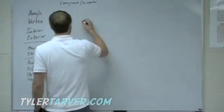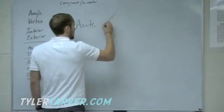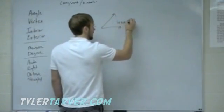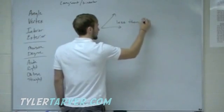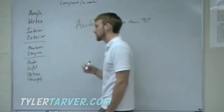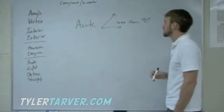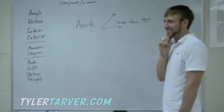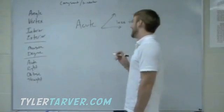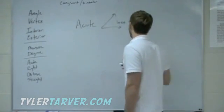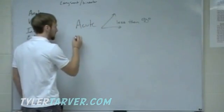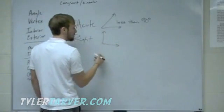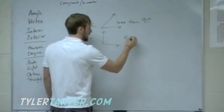There are different types of angles. Acute — which means it is less than 90 degrees. Then there are right angles, which you'll see a lot. A right angle means it is exactly 90 degrees.